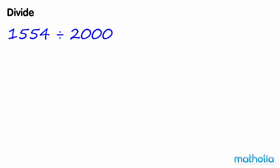Divide. Find 1554 divide 2000. 2000 is a multiple of 1000, so we can write 1554 divide 2000 equals 1554 divide 2 divide 1000.